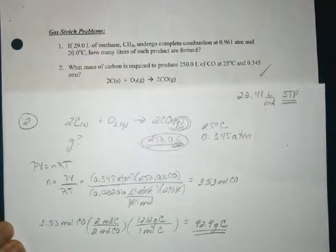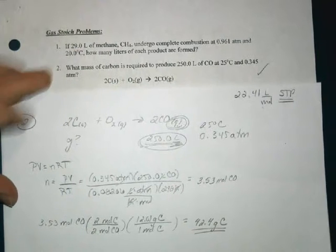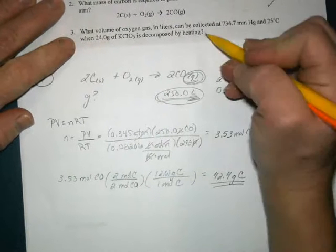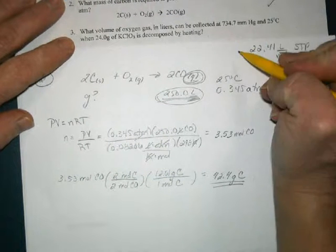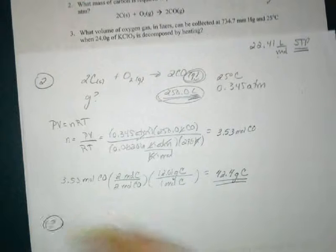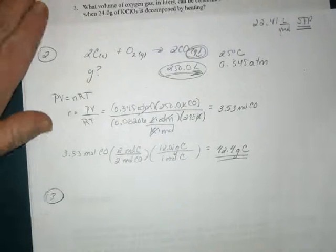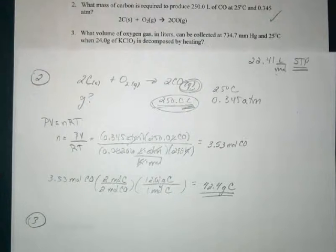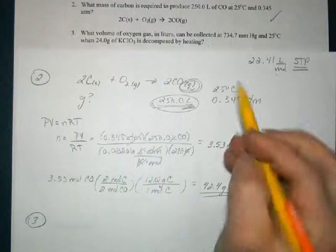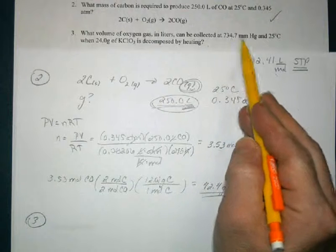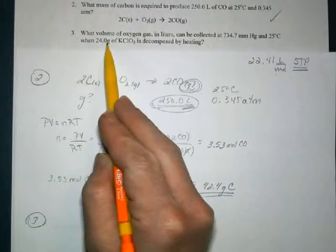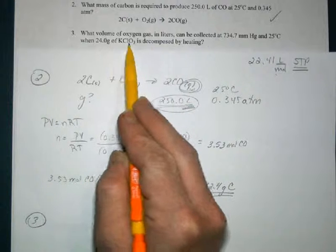I'd like to do one where we are given mass and we're asked for volume. So let's look at number three. Number three reads: what volume of oxygen gas in liters can be collected at 734.7 millimeters of mercury and 25 Celsius when 24 grams of potassium chlorate is decomposed?